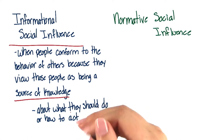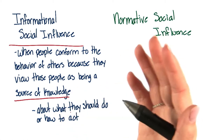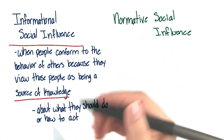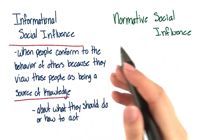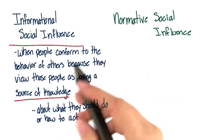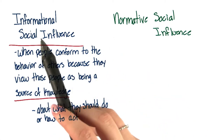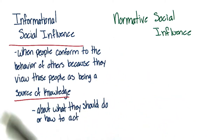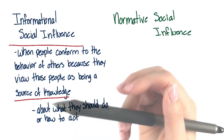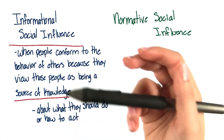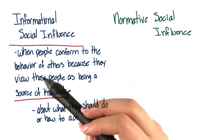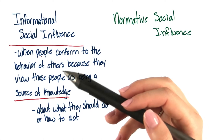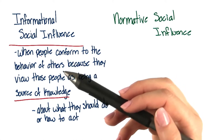Have you ever found yourself in a new situation and were unsure of how to act or what to do? Did you look to others to see how they were behaving? This is an example of informational social influence. Consider a freshman starting college — the person may look around to see how other people are behaving in the lunchroom, for example.